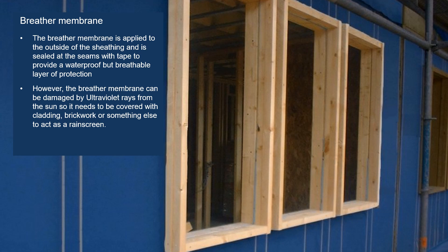Because it's made of a plastic material, there is a potential that it can degrade in sunlight. The ultraviolet rays from the sun can damage it, so we can't just leave that as the finish for the building. We need some form of cover for it to keep it in shade and keep the UV light away from it. That tends to be cladding — so it could be timber cladding, metal cladding, brickwork, blockwork, or something else to act as a rain screen.